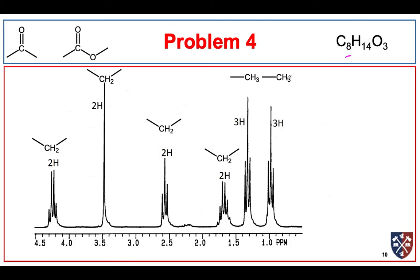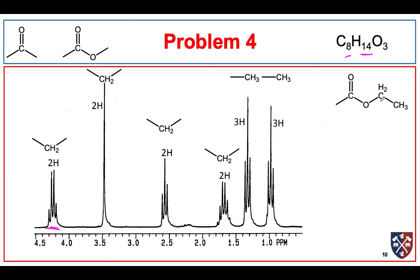Counting protons: 3, 6, 8, 10, 12, 14 — this looks promising. We see something way out past 4 ppm, so if we have an ester, this CH2 is probably bonded to the ester. It looks like a quartet, so it's bonded to an ethyl group, solving one side. The peak at 4.3 ppm is that quartet, split by the triplet of the adjacent CH3.